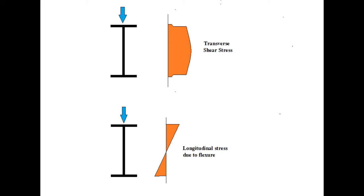The flexural stress is the fiber stress running along the axis of the member. In the shear stress distribution, the web plays the major role compared to the flange. In the normal axial stress distribution due to flexure, the flange has a greater role than the web — although the web also contributes, the flange is more important here.